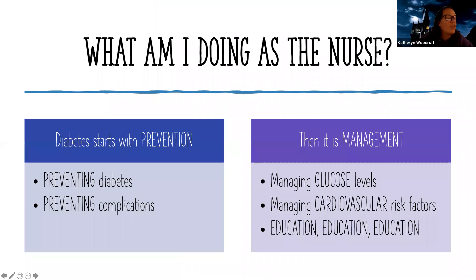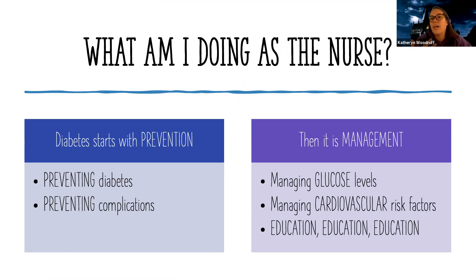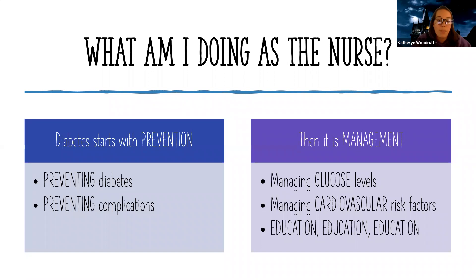So what do we do as the nurse? Diabetes management is going to start with prevention — preventing diabetes, doing early screening for those at risk, and trying to prevent it through diet, lifestyle, and other changes. Also preventing complications: once a patient has diabetes, doing testing, regular monitoring, and giving education to help them avoid those complications.